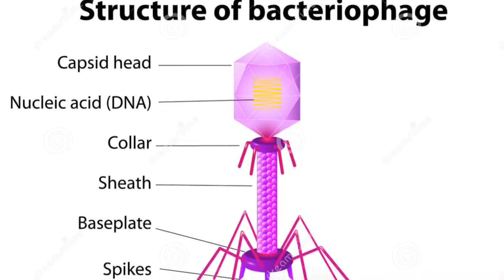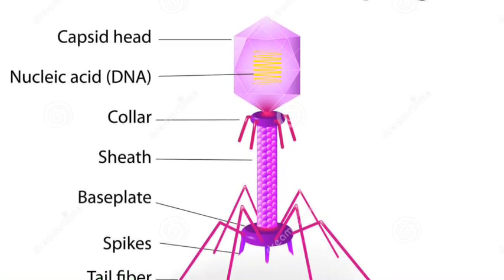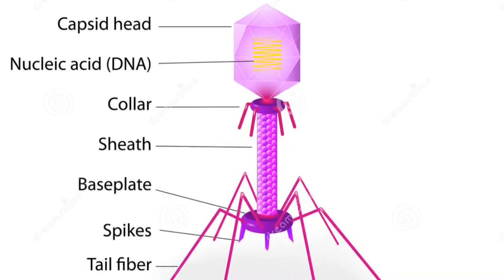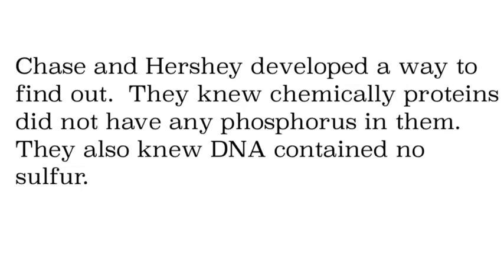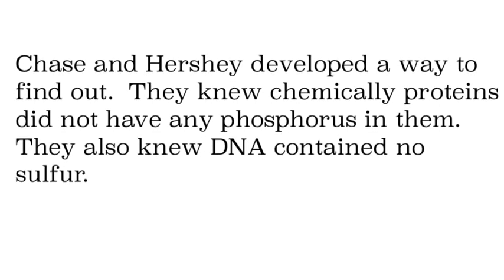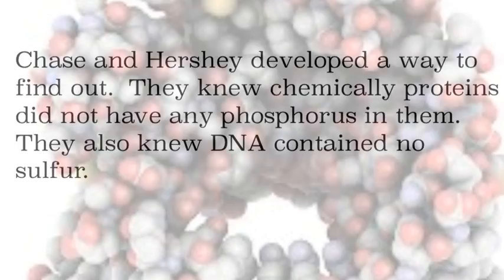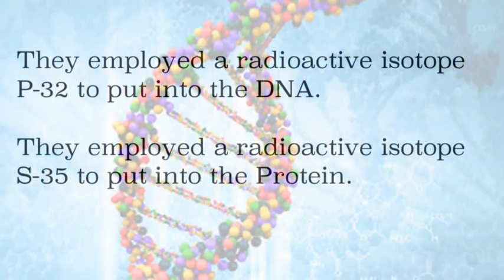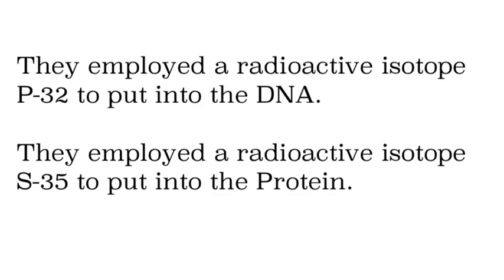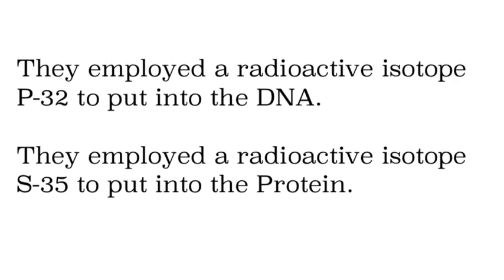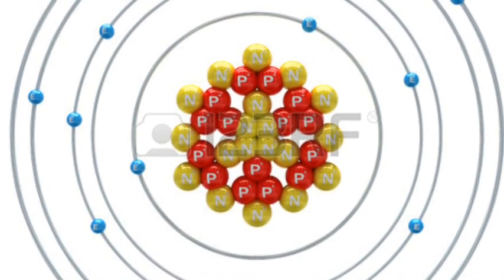They knew the virus only had protein and DNA — all the purple and red shown here is protein. But they didn't know which part went into the cell, and that's what Hershey and Chase were trying to figure out. They knew that proteins had sulfur but not phosphorus, and that DNA had phosphorus but not sulfur. So they used radioactive isotopes — phosphorus P32 and sulfur S35 — as markers to trace where the protein and where the DNA went.